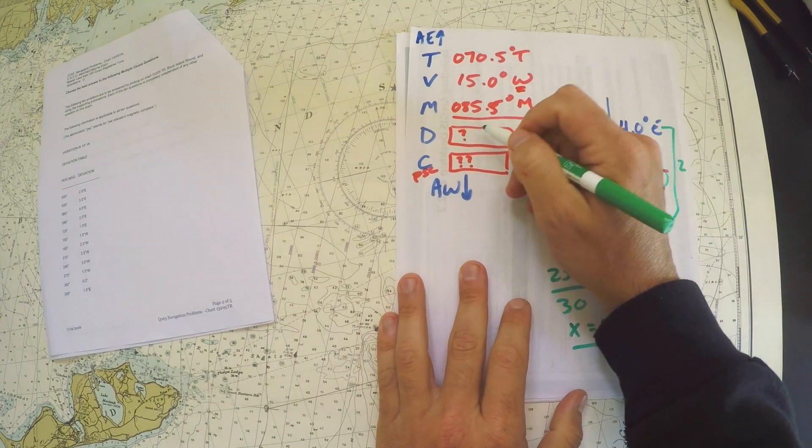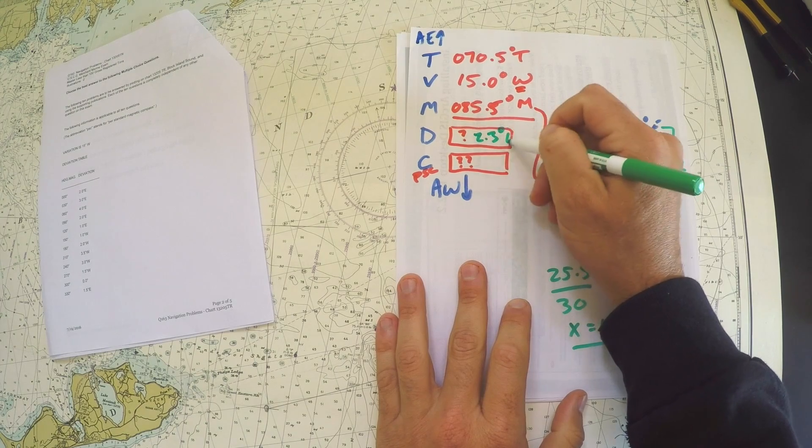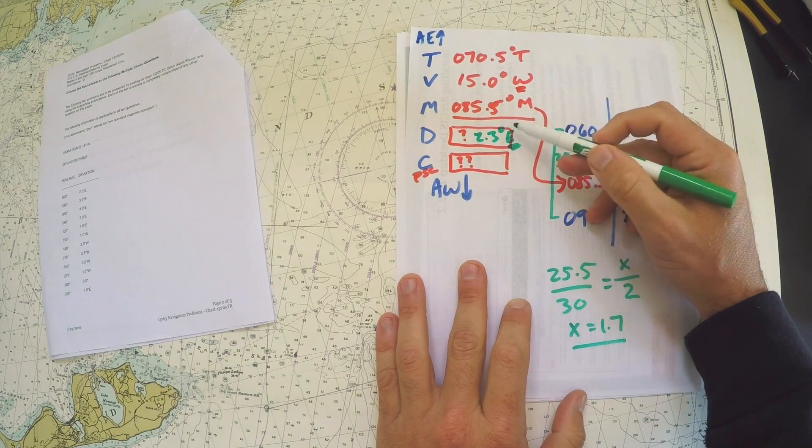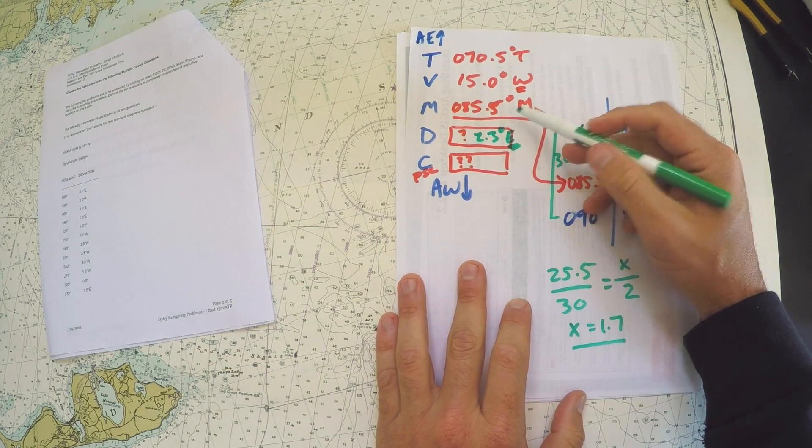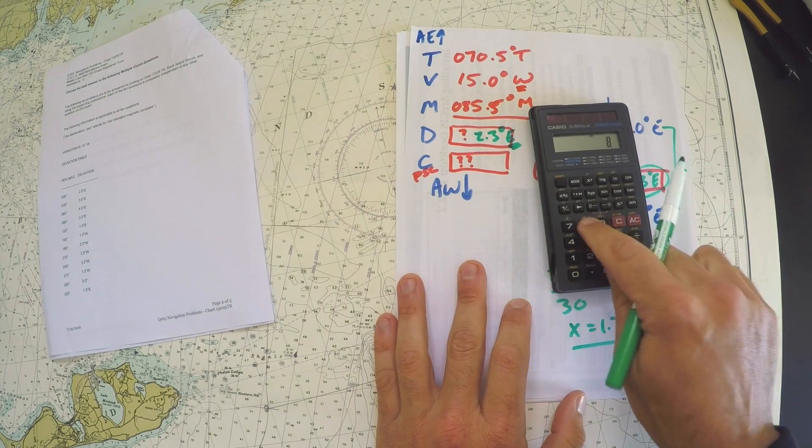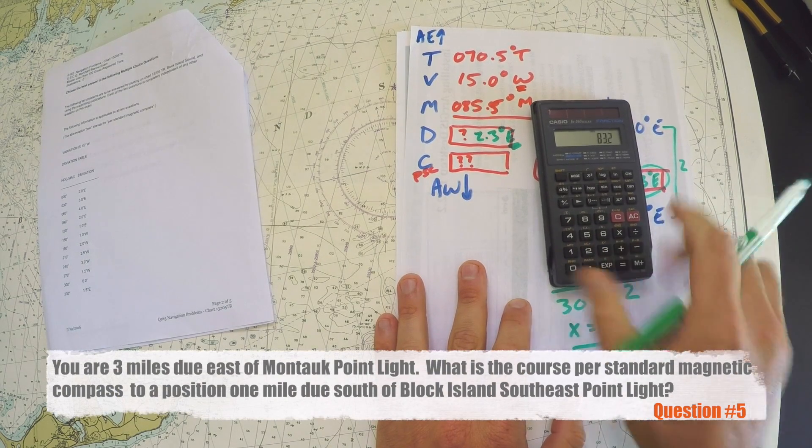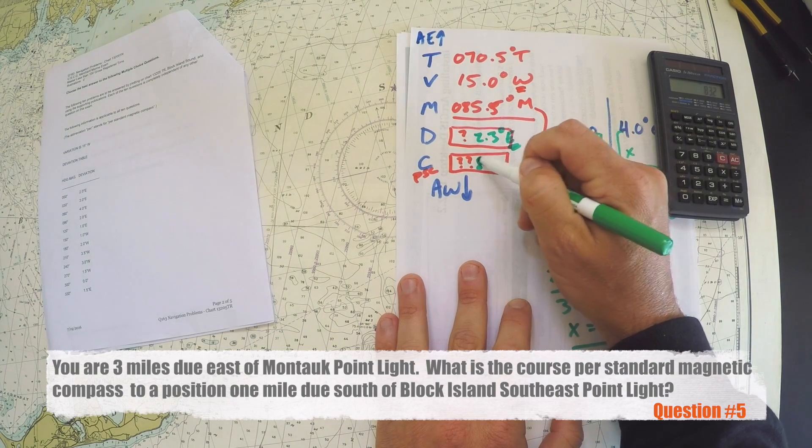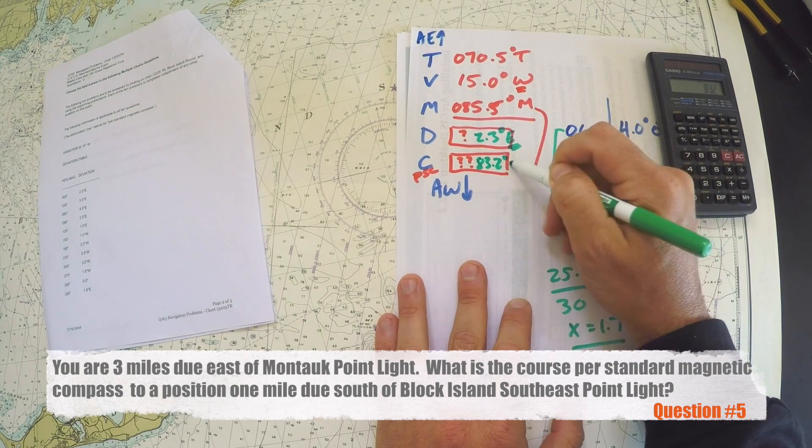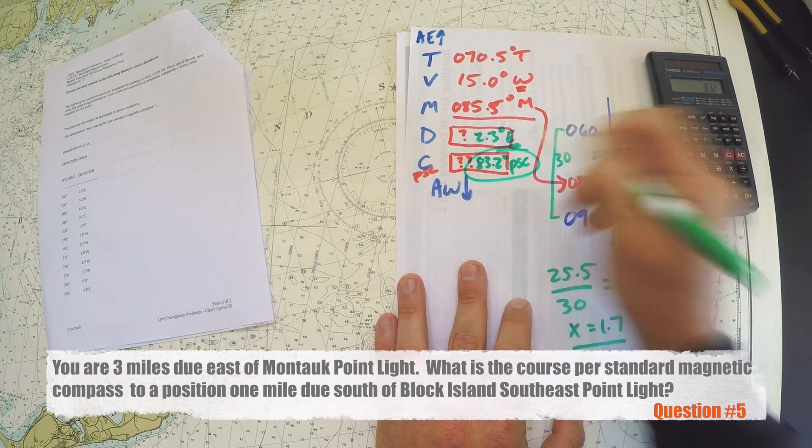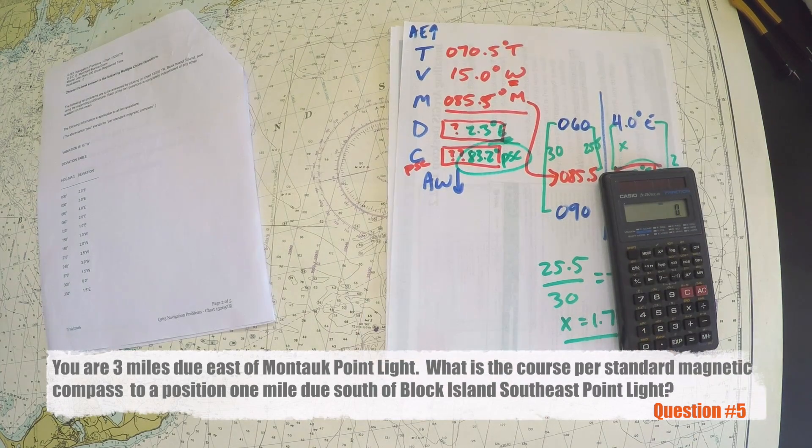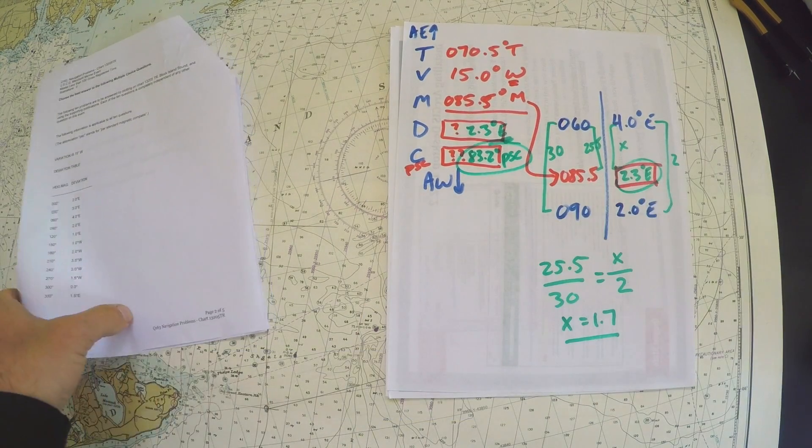So that value goes over here: 2.3 degrees east. And since it's east we need to subtract that. So if we do 85.5 minus 2.3, you end up with 83.2 degrees per steering compass as our final answer: 83.2.